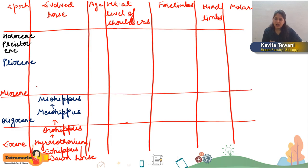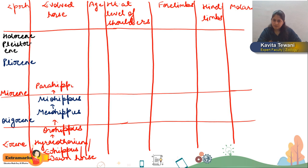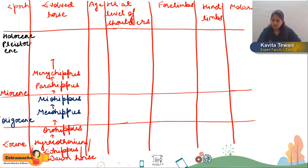After that, in the Miocene epoch, Miohippus evolved, and then Merychippus evolved. Merychippus is called a ruminating horse because it was able to do rumination — grass-eating was done by it. In between them, one horse evolved called Calippus, but it did not follow the line of evolution and got extinct.